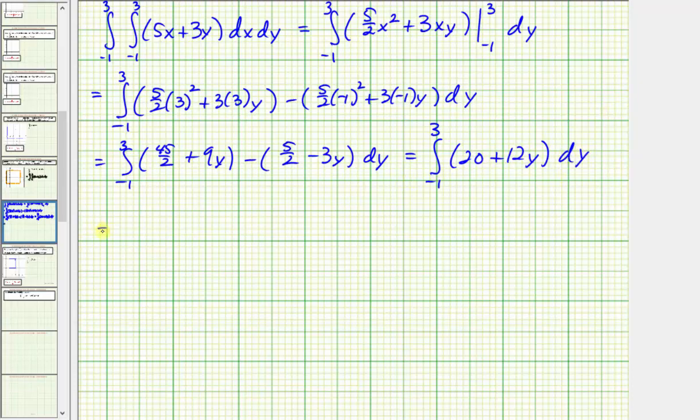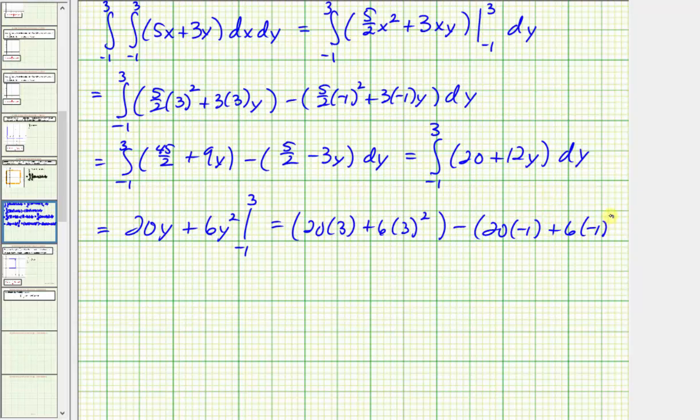Now we integrate with respect to y. So we have 20y, plus 12 times y squared divided by two, that'd be six y squared. First evaluate at three, so we have 20 times three, plus six times three squared, minus, substitute negative one for y, so we have 20 times negative one, plus six times negative one squared. So here we have 60, plus, this would be 54, so we have 114, minus negative 20 plus six, that's negative 14, so we have 114 plus 14, which equals 128.